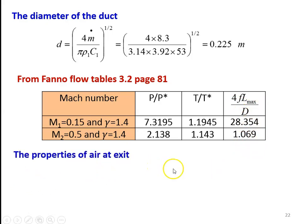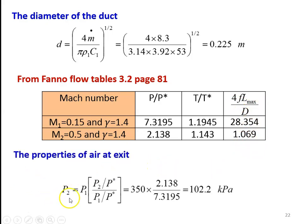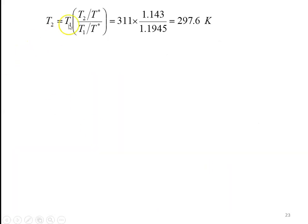Now, the properties of air at exit. We calculate the pressure P2: P2 equal to P1 into (P2 by P star) divided by (P1 by P star), so 350 into 2.138 divided by 7.3195, equal to 102.2 kilopascal. And temperature T2 equal to T1 into (T2 by T star) divided by (T1 by T star), equal to 311 into 1.143 divided by 1.1945, equal to 297.6 Kelvin.